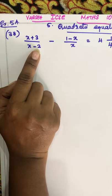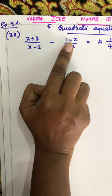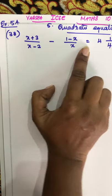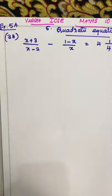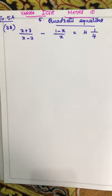x plus 3 by x minus 2, minus 1 minus 6 by x, equal to 4 and 1 by 4. So, this is an improper fraction.